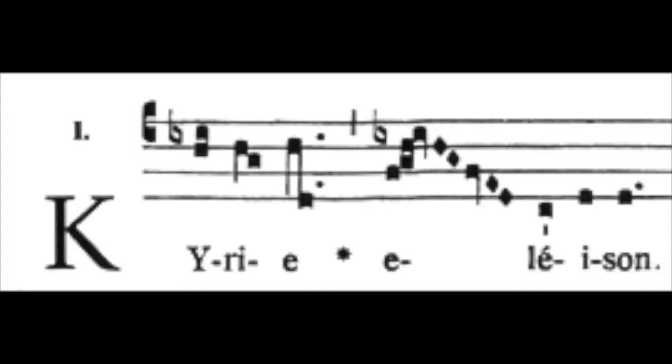The development of polyphony. For centuries, Western music was basically monophonic, only having one single line. But sometime between 700 and 900 AD, the first steps were taken in a revolution that eventually transformed Western music.